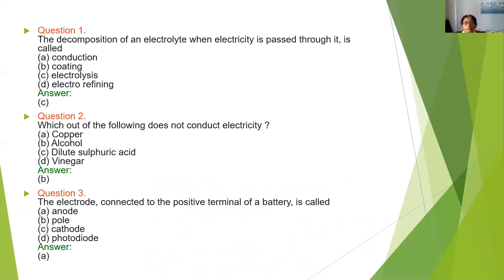Now let's discuss some MCQ questions. The decomposition of an electrolyte when electricity is passed through it is called — conduction, coating, electrolysis, or electrorefining? Since the electrolyte breaks into ions, this is called electrolysis. The answer is electrolysis.